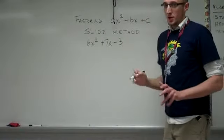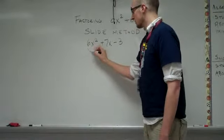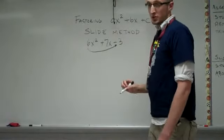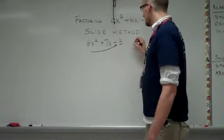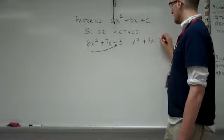With the slide method there's a lot of steps, but it works out every time. So take your a value and multiply it by the c value. That's where the slide comes in. This gives us x squared plus 7x minus 18.